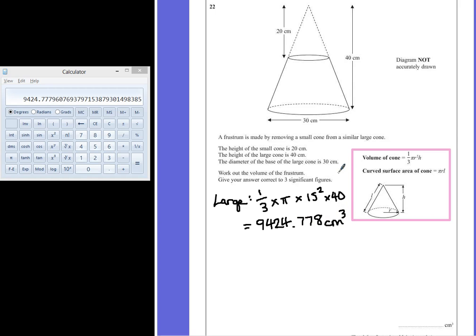Now the smaller cone poses a slight problem because we don't know what the radius of the bottom of the cone would be, or the top of the frustum in this case. But we are told that the two cones are similar, and that means we have a scale factor. The height of the smaller cone is half of the larger cone, which means the radius is also going to be half of the larger cone.